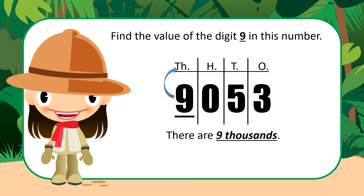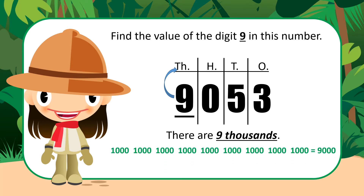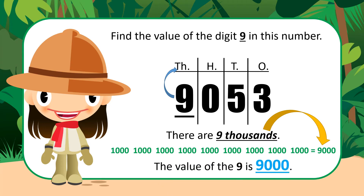Now, what does 9,000 really look like? It takes a bit longer to add 1,000 plus 1,000 plus 1,000 all the way to 9,000. So we're simply going to say that 9,000 equals 9,000. The value of the 9 in this number is 9,000.